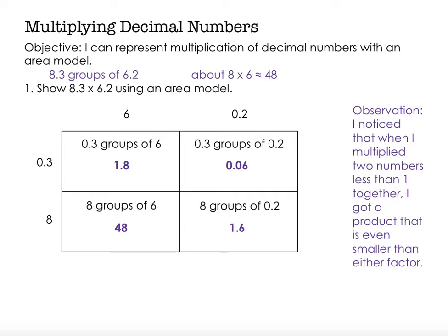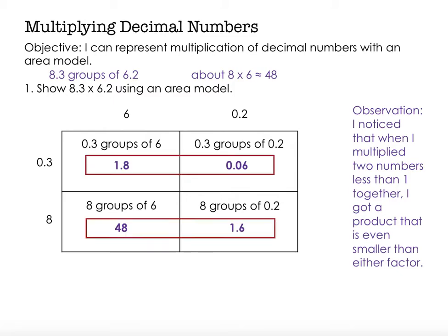Now, with an area model, I could write down all four of these products and add them together. But I can also do a little mental math before I add them together, so I have less to write down. So I'm going to add together 1 and 8 tenths plus 6 hundredths.